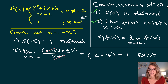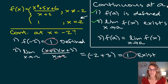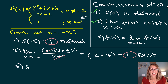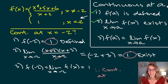Step three: f(-2) equals the limit as x approaches -2 of f(x), and both equal one. All three conditions are met, so we can conclude that f(x) is continuous at x = -2.